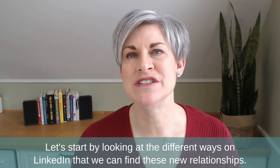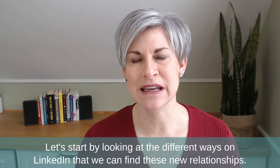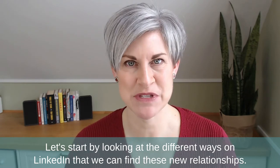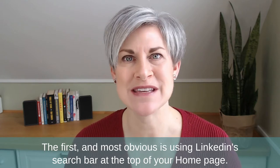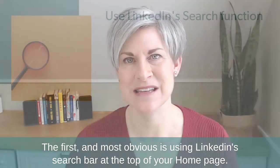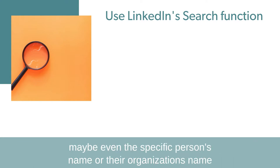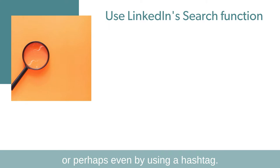Let's start by looking at the different ways on LinkedIn that we can find new relationships. The first and most obvious is using LinkedIn's search bar at the top of your homepage. Using the search bar, you can search by keyword, job title, a specific person's name, their organization's name, or perhaps even by using a hashtag.